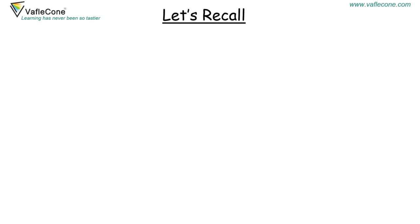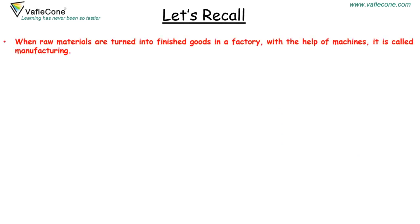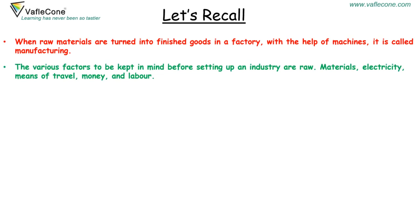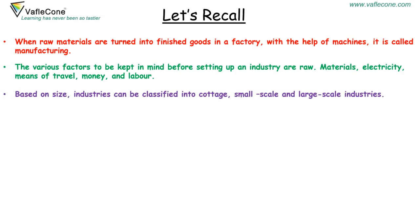When raw materials are turned into finished goods in a factory with the help of machines, it is called manufacturing. The various factors to be kept in mind before setting up an industry are raw materials, electricity, means of travel, money and labor. Based on size, industries can be classified into cottage, small scale and large scale industries.